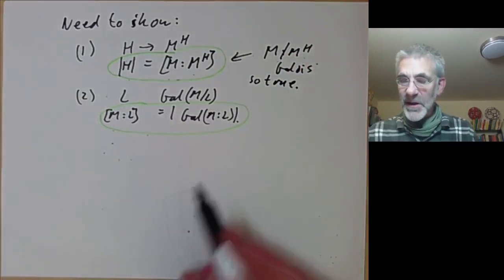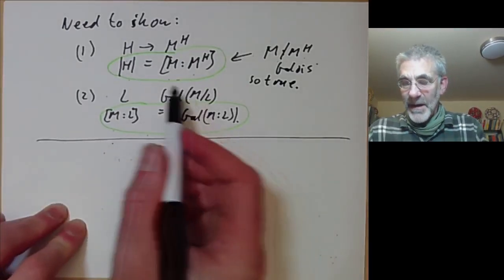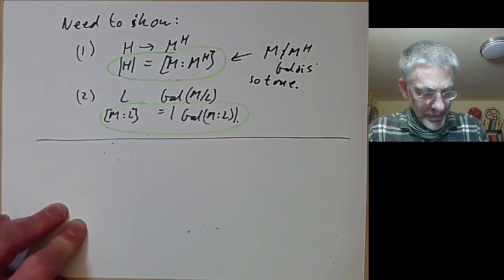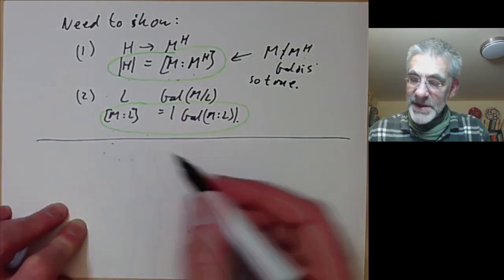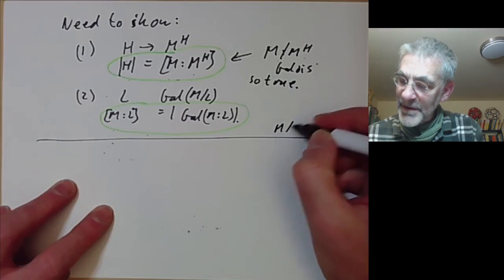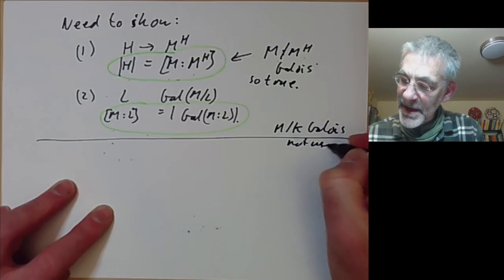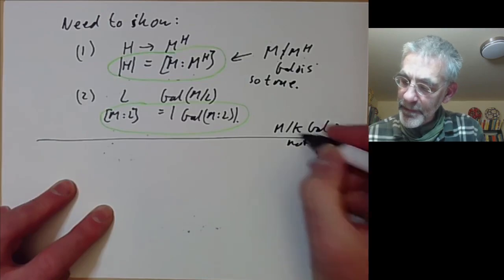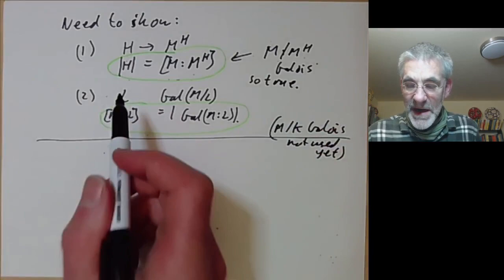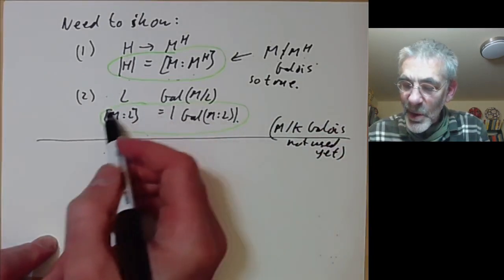Incidentally, notice that so far we have not used the fact that the extension is Galois — we haven't used the fact that M over K is Galois. However, we need to use the fact that M over K is Galois in order to prove this second inequality.